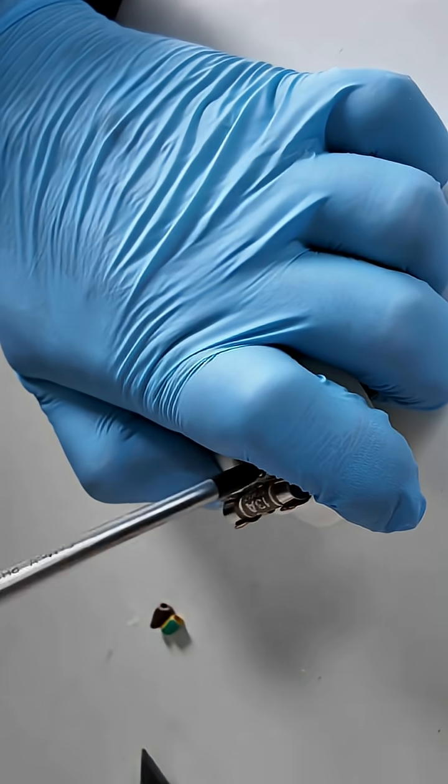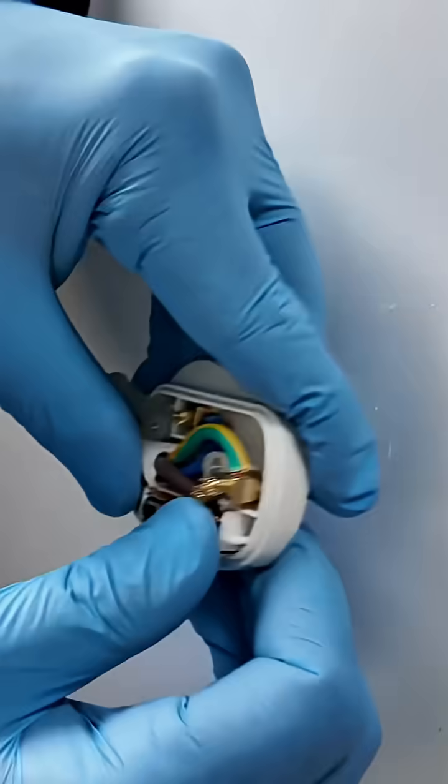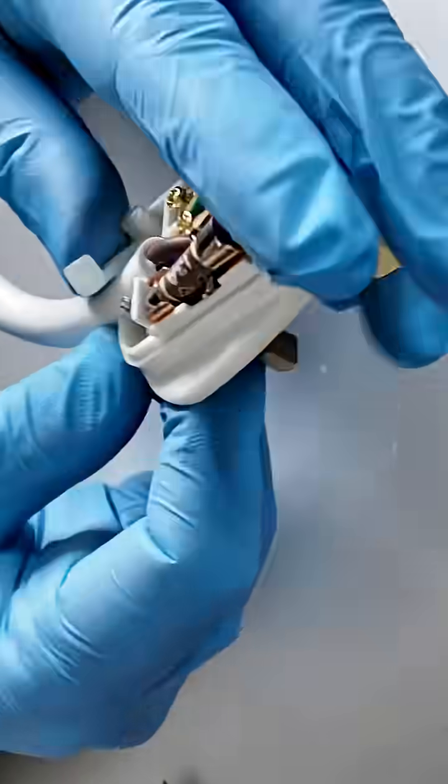It's important: no bare copper should be visible outside the terminal. The earth wire is slightly longer, so it stays connected if the cable is pulled.